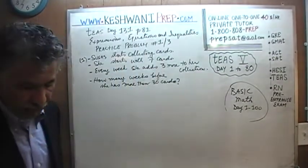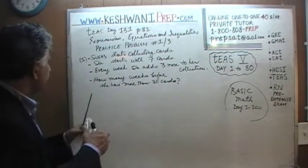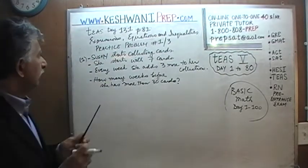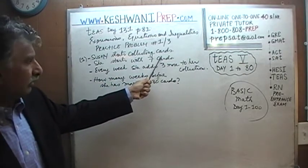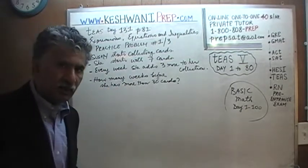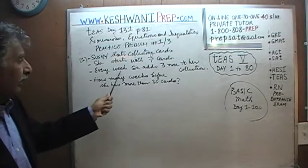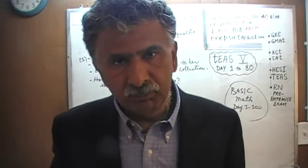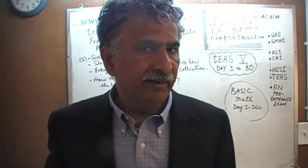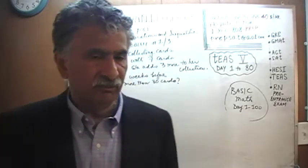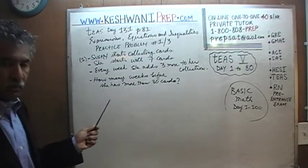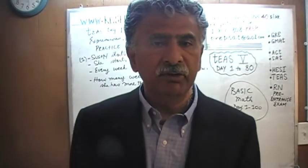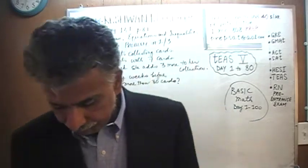So let's read the problem together. It says: Susan starts collecting postcards. We are told that she starts with seven cards. After that, every week she adds three more to her collection. The question is: how many weeks before she has more than 30 cards? How many weeks does she need to do this process before she is a proud owner of 30 postcards?